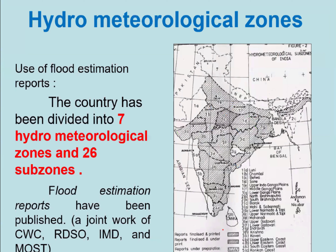This is regarding the physical parameters — five physical parameters are to be worked out for calculating the design discharge. Next are the hydrometeorological parameters.